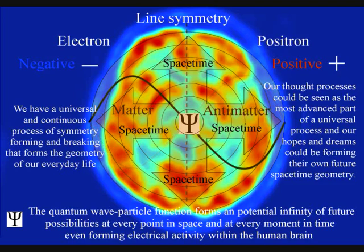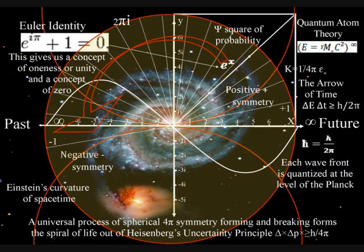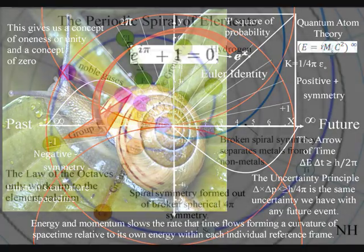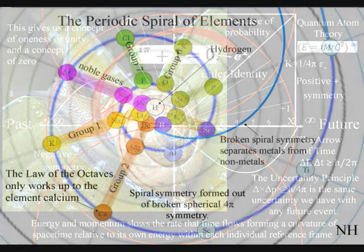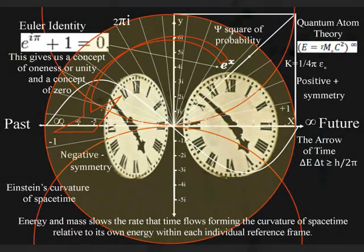This process is totally universal and interactive, from the largest object to the smallest creature, right down to the smallest element of the periodic table, will slow the rate that time flows, forming a curvature of space-time relative to its own energy or mass.